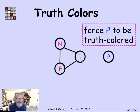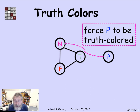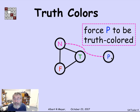Now suppose I have some other vertex, and I want this vertex to act like a propositional variable. I'd like this vertex to be colored either with the true color or the false color, just as a propositional variable takes on the value true or false. How do I force this vertex P to be truth-colored? All I do is attach it via an edge to the neutral color. In a three-coloring, it has to have a color different from neutral, and there are only two other colors: true and false.